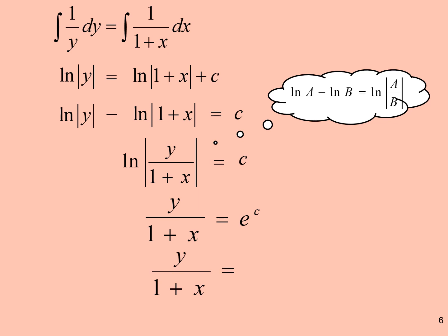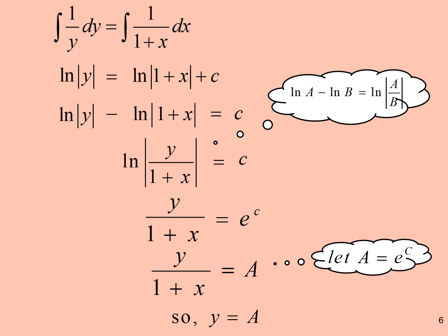So, we get ln(Y / (1 + x)) equals C. We let A equal e^C, so Y equals A(1 + x), where A is a constant.